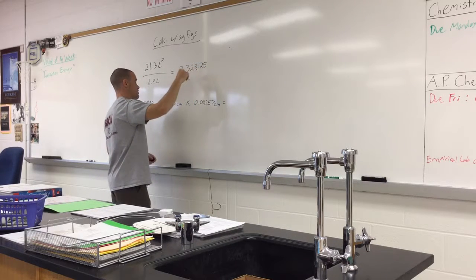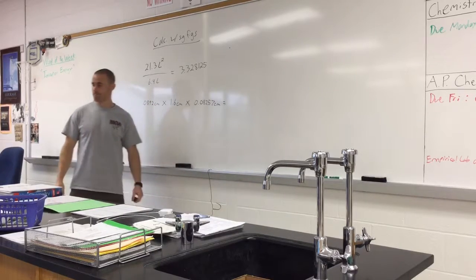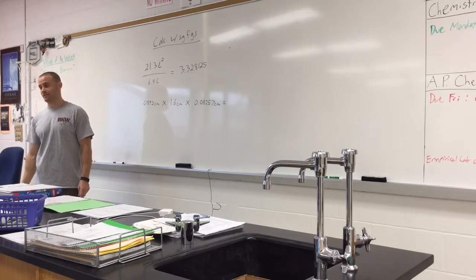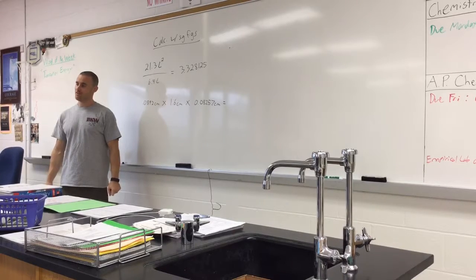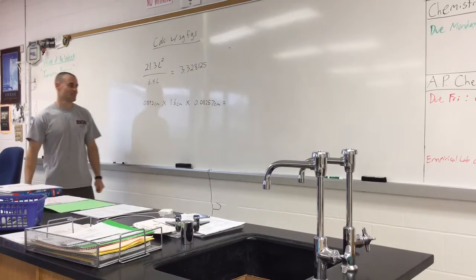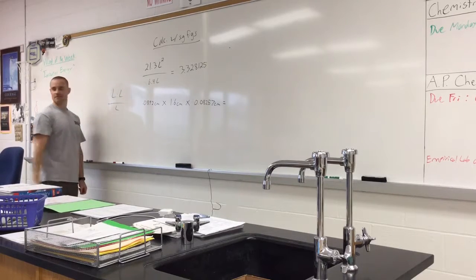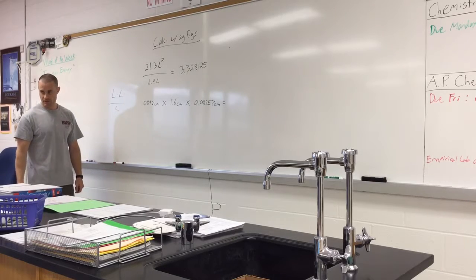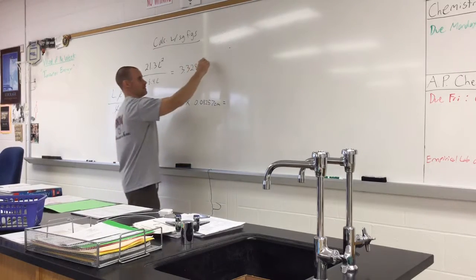Liters squared divided by liters — what's liters squared? It's liters times liters, then divided by liters. So one liter cancels out the other, and this would be just liters. Good job.